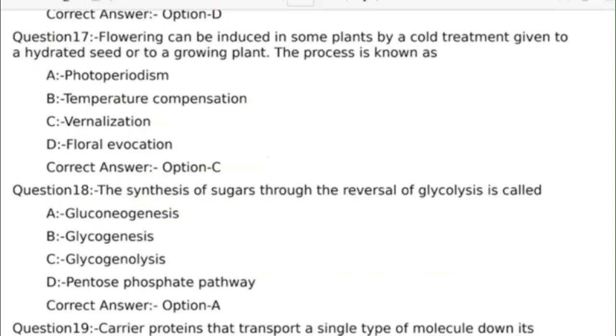Eighteenth question: The synthesis of sugars through the reversal of glycolysis is called? Answer options: Option A, Gluconeogenesis; Option B, Glycogenesis; Option C, Glycogenolysis; Option D, Pentose phosphate pathway. Correct answer: Option A, Gluconeogenesis.